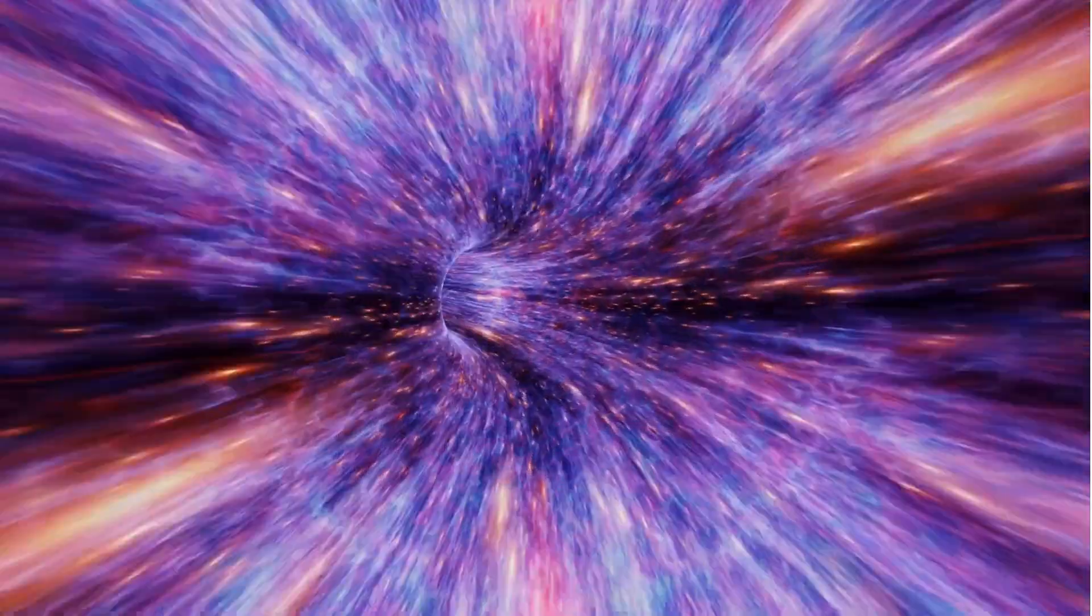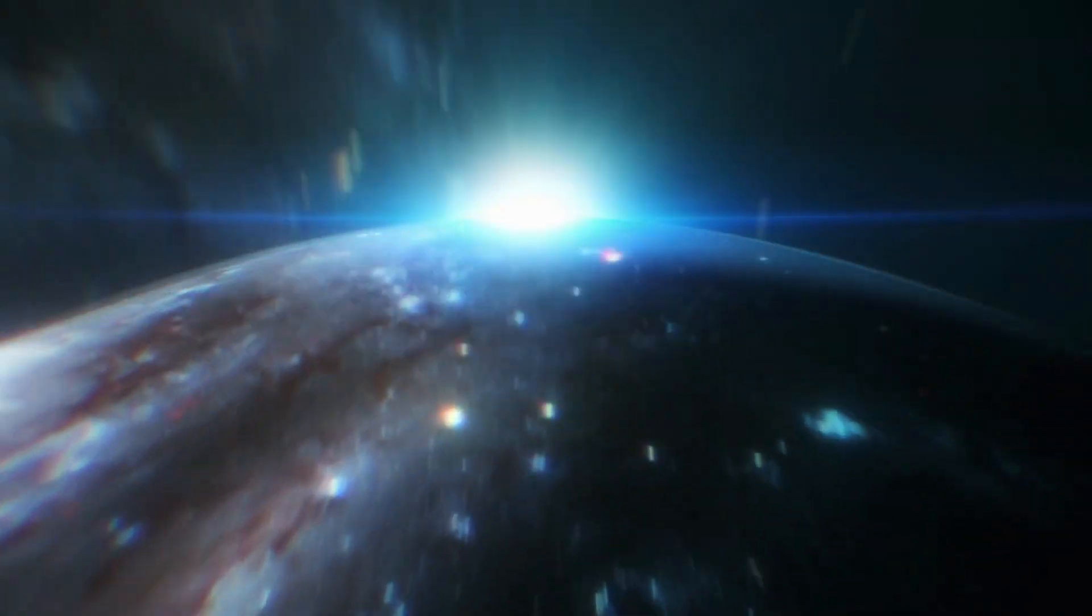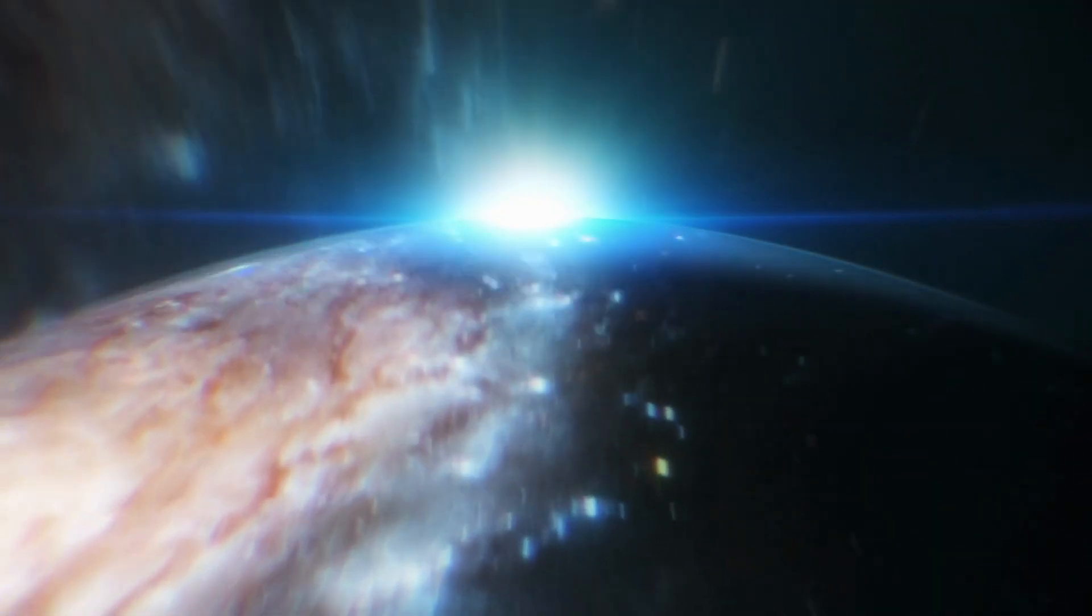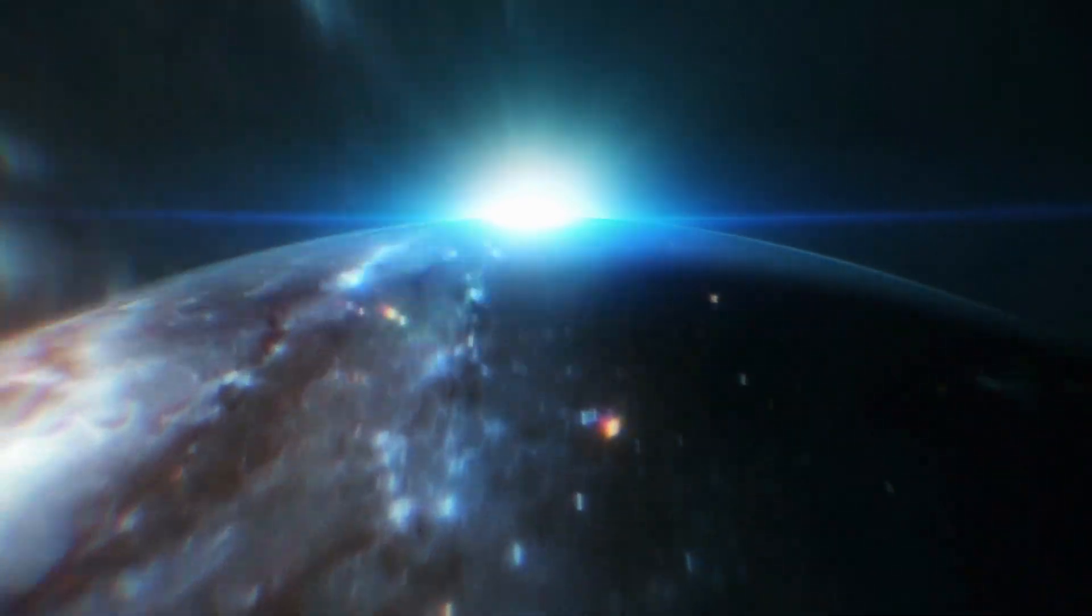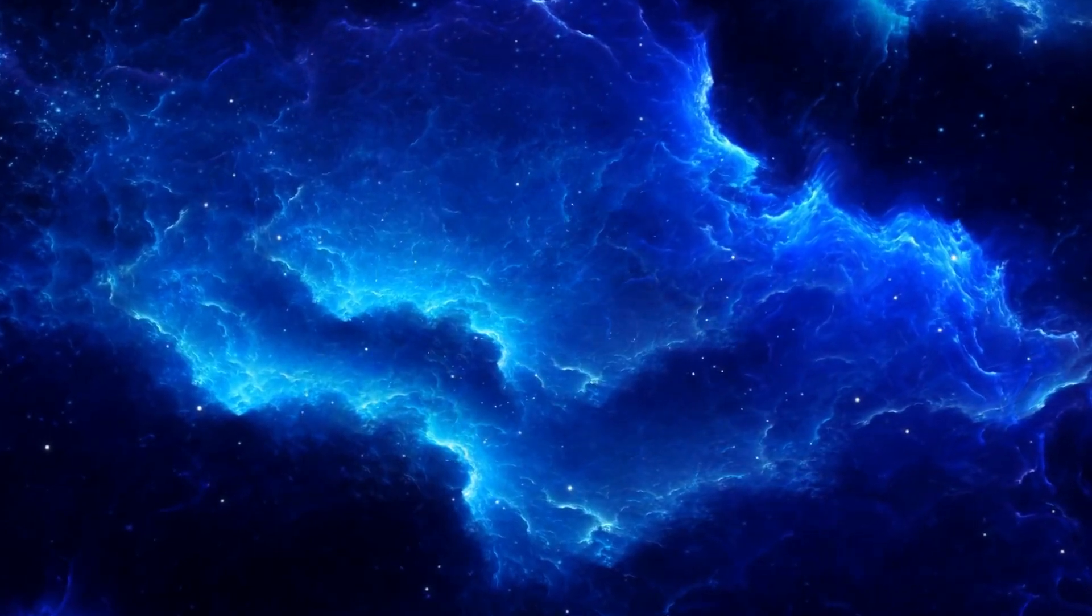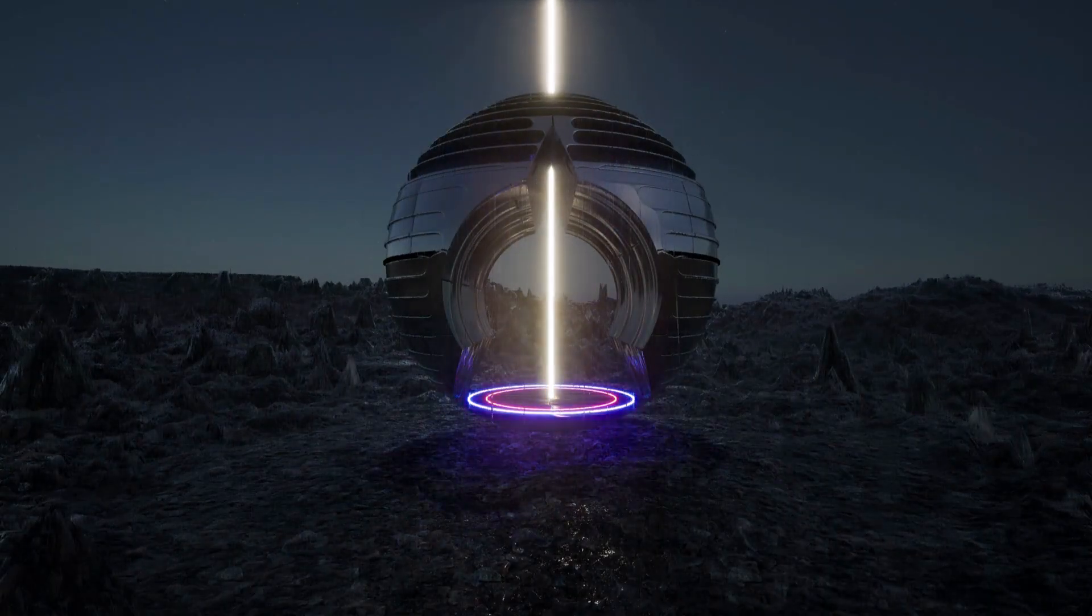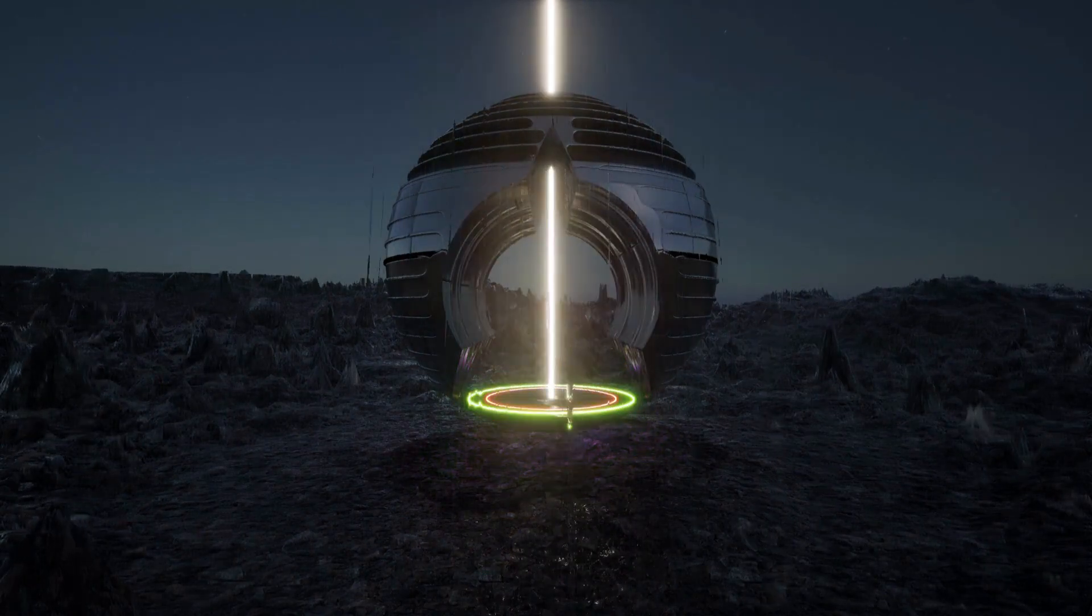They likened a wormhole, which transfers an object from one place to another through a tunnel, to a wormhole between quantum entangled particles, which instantly transfer information. Now, according to this, if we transfer an object from one place to another place using entanglement, the existence of wormholes is proven and we also know how to create artificial wormholes in a lab.